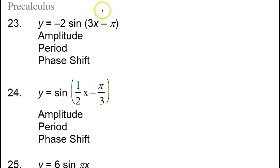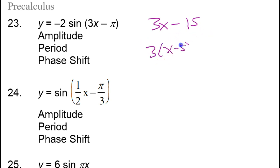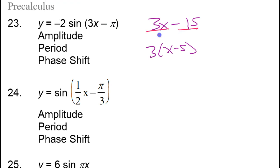Be careful. When you have a b value like this and a phase shift that is trying to happen, you cannot leave it in this form. Similarly, if I have 3x minus 15, I could write that as 3 times x minus 5. You could see that I pulled out the 3 and then divided by 3, which is where I got the x minus 5 from.